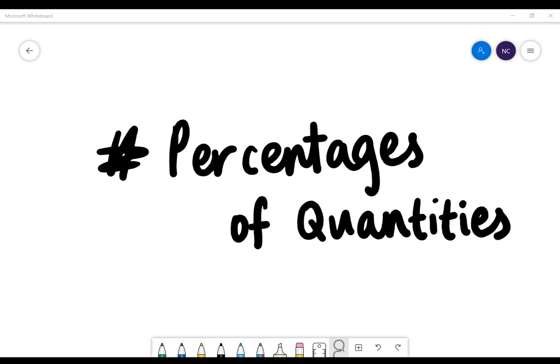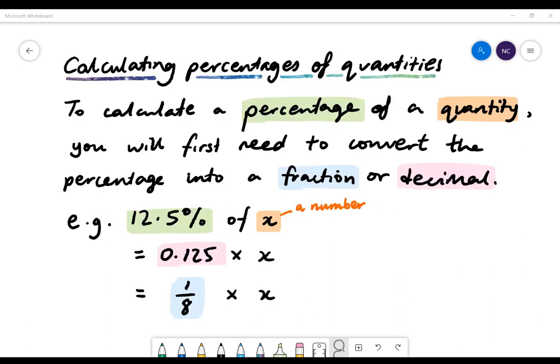Today we're going to be looking at calculating percentages of quantities. To calculate a percentage of a quantity, you will first need to convert the percentage into a fraction or a decimal. For example, 12.5% of a number x is the same as 0.125 multiplied by x, or 1 over 8 multiplied by x.